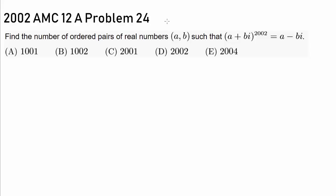Let's try out number 24. Find the number of ordered pairs of real numbers A, B such that (A + Bi)^2002 = A - Bi.